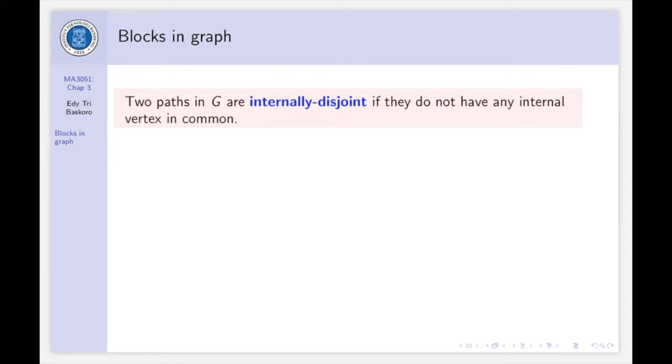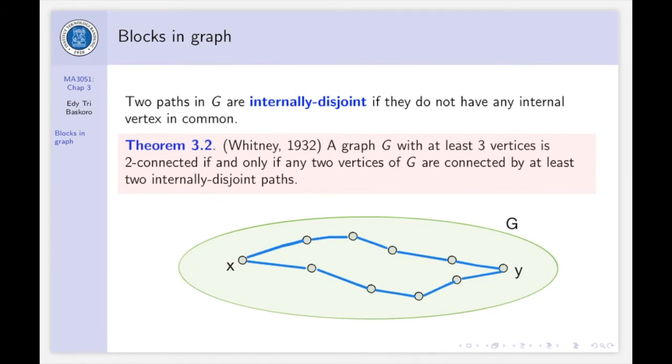Now, two paths in a graph are internally disjoint if they do not have any internal vertex in common. And we have the following theorem, this is a very important and famous theorem by Whitney in 1932. A graph G with at least three vertices is two connected if and only if any two vertices of G are connected at least with two internally disjoint paths. So this is the illustration. This theorem characterizes graph G, which is two connected.